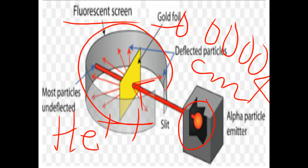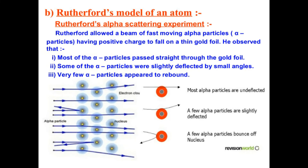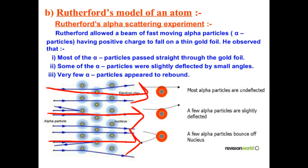Each alpha particle had the ability to penetrate or pass through a substance, and for this he selected gold. He observed that most of the alpha particles passed straight through the gold foil, like rays passing through gold atoms. Some of the alpha particles were slightly deflected by small angles.